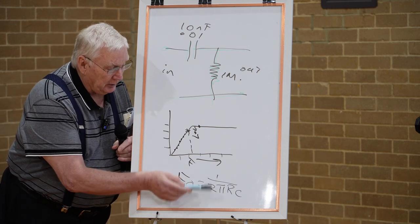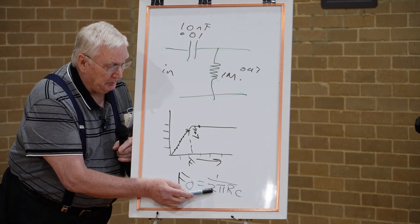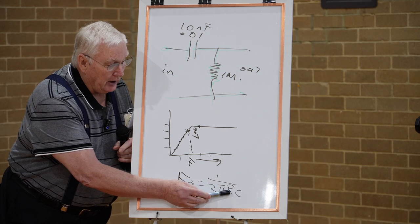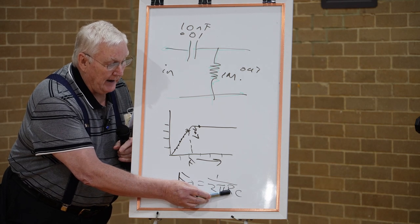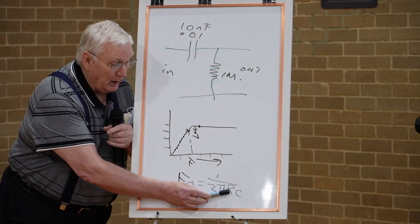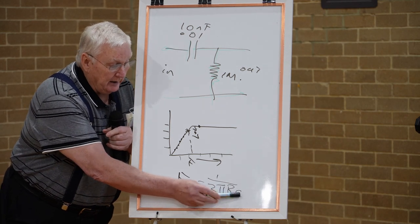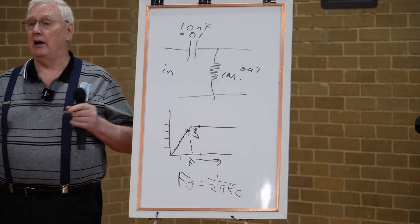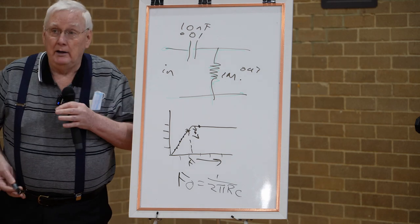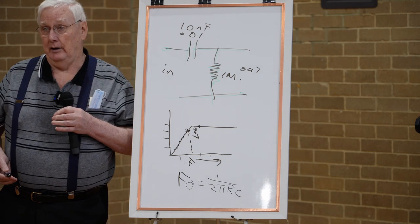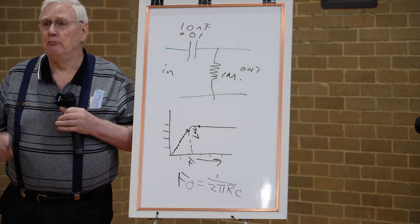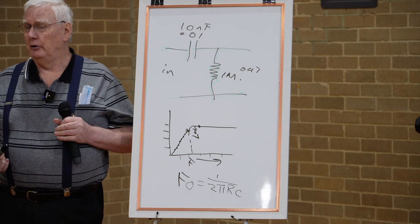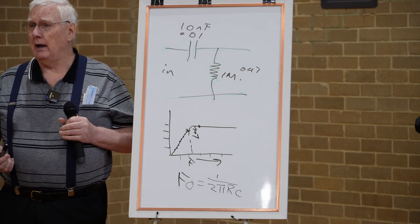FO is calculable. Take the reciprocal of 6.28 times R times C, where R might be one meg and C is say 0.1 microfarad. Really simple to work out.